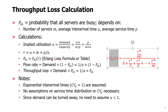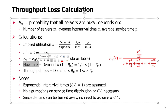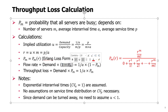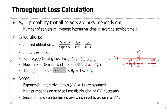The Erlang Loss formula is quite complex; we will use Excel or another software to compute it. Once we have the probability PM, we can calculate the flow rate as demand times (1 minus PM) — the percentage of demand that is not lost — and the throughput loss as demand times PM, where demand is 1/A.